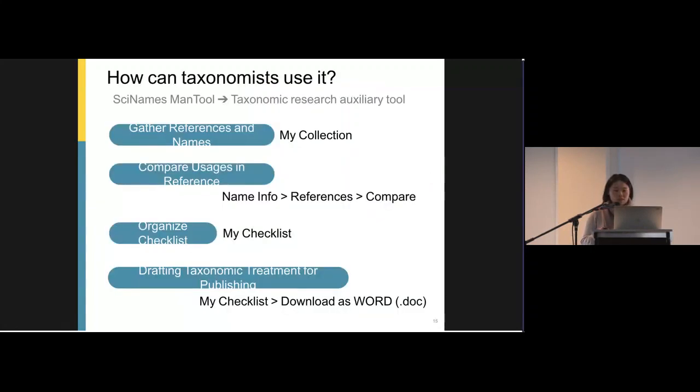And how can taxonomists use the scientific name management tool? They can use the collect function and compare usage in reference and organize checklists and drafting taxonomic treatments for publishing. So this is the framework of TaiCOL. We developed the scientific name management tool as the data core of TaiCOL portal, which is responsible for managing complex taxonomic history of scientific names, and make it align with taxonomist's workflow.